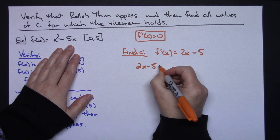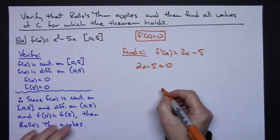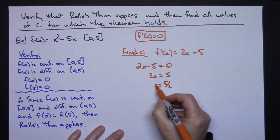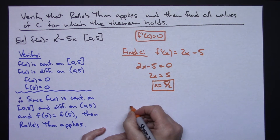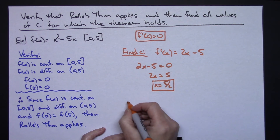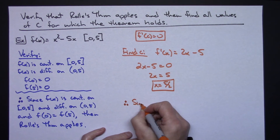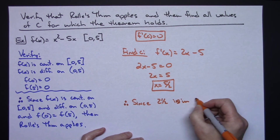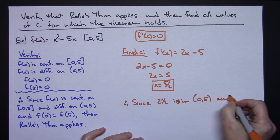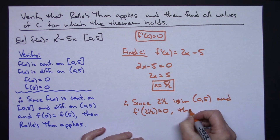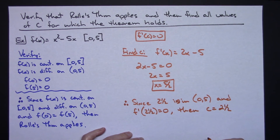Setting that derivative equal to 0: 2x minus 5 equals 0. Solving that two-step equation gives x equals 5/2. So I check: 5/2 is 2 and a half — is 2 and a half in the open interval from 0 to 5? Yes it is. Since 2 and a half is in the open interval from 0 to 5 and F prime of 2 and a half equals 0, then C equals 2 and a half.